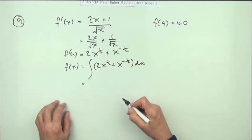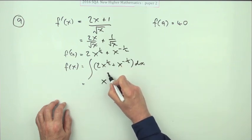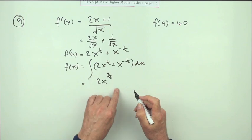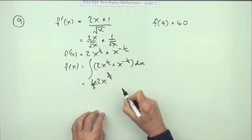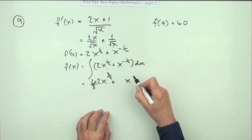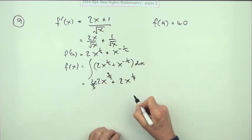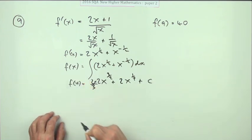Add one to the power, goes up to three upon two. Instead of dividing by three upon two, which is a bit clumsy, I'll multiply by the reciprocal, so it's times two upon three. Add one to the power, so it's up to a half. Instead of dividing by half, I'll multiply by the reciprocal, so it's times two plus C.